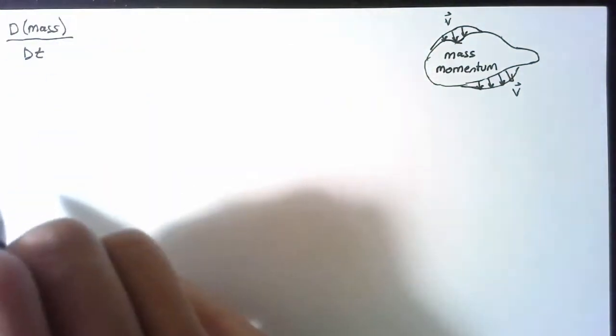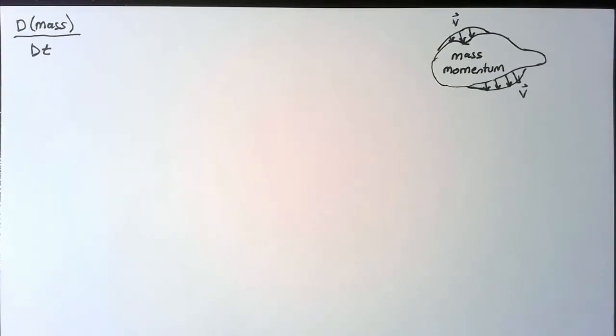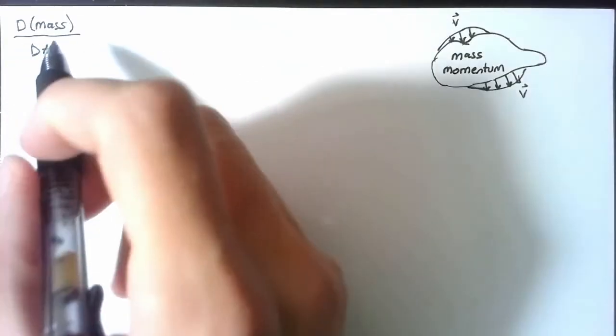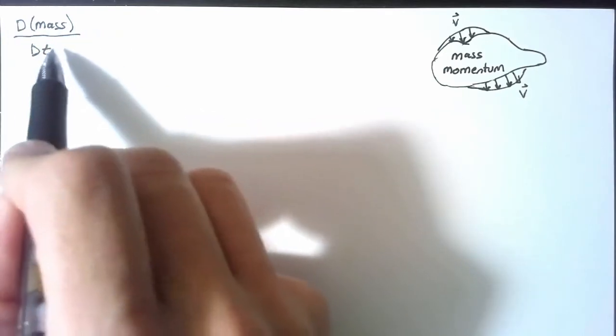The substantial derivative, or material derivative of mass, which if you remember, tracks the mass itself, follows it around. So we know that this is going to be equal to zero.